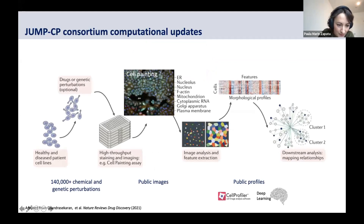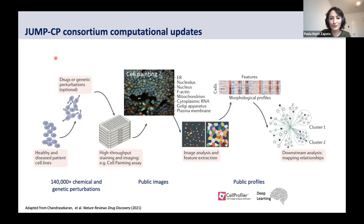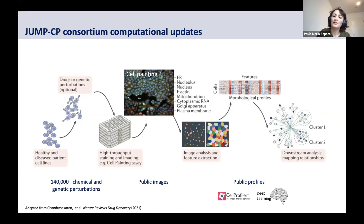A very quick recap: here I'm presenting the slide that Niransh already showed you — the profiling workshop workflow we're using in the consortium. We start with cells treated with different perturbations, use the Cell Painting assay to image the treated cells, and extract morphological profiles for downstream analysis. In the consortium we promise to screen 140,000 chemical and genetic perturbations and to publish both images and profiles using CellProfiler and deep learning approaches.